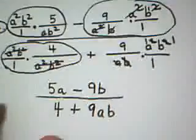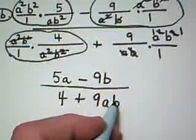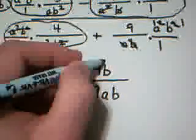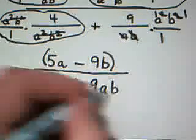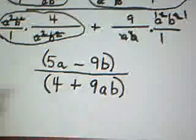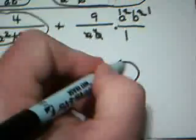I want to make sure that my final answer is in lowest terms, but 5A minus 9B is one factor. I'll put parens around it to show that. 4 plus 9AB is one factor. And that means I'm done.